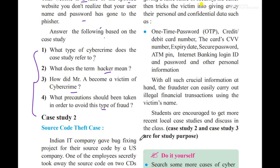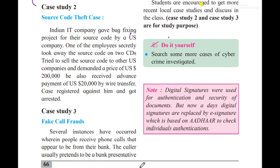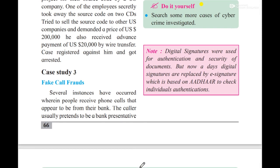Case Study 2 — Source Code Theft: A software company's source code — the coding part of a particular software, like a PHP portal — was secretly copied by an employee onto CDs and sold to another company for a demand of two lakh dollars, with a wire transfer payment of twenty thousand US dollars received. This is also cybercrime — source code theft.